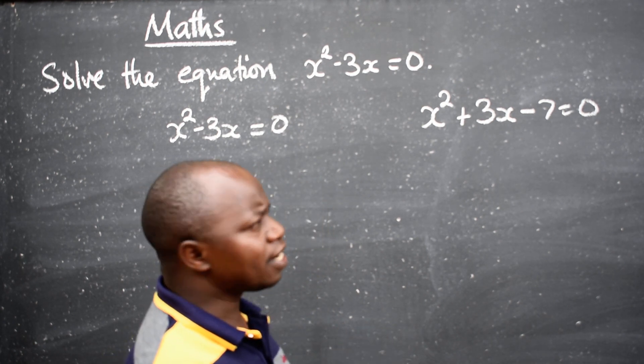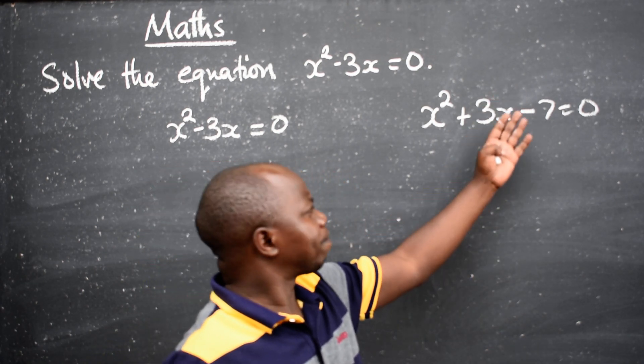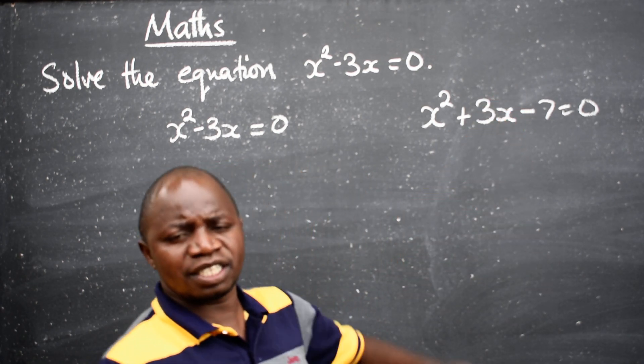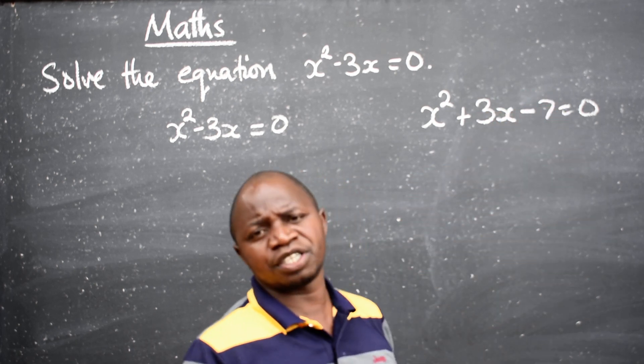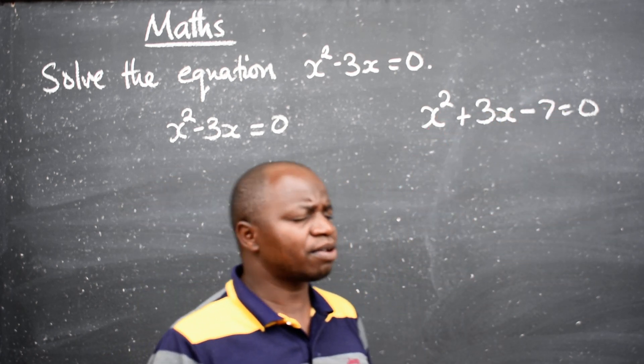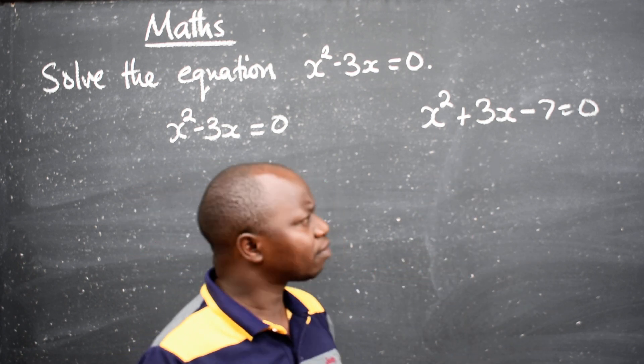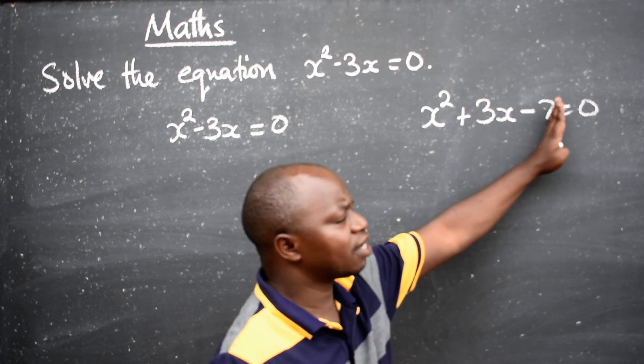Except that when you are given three terms, you can either use the quadratic formula to solve the equation. You can also use factorization method and completing the square method. That is if the terms are three.